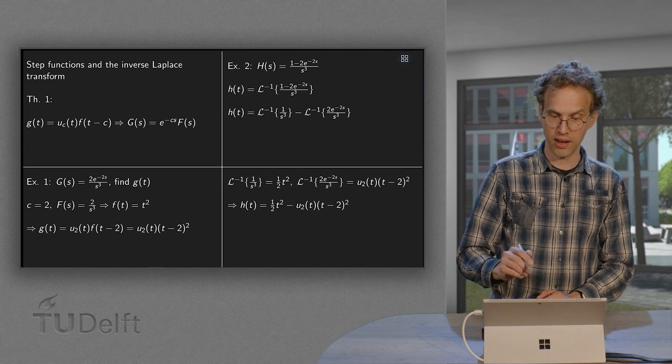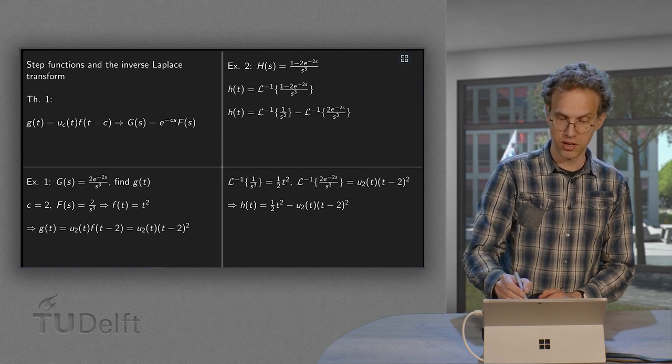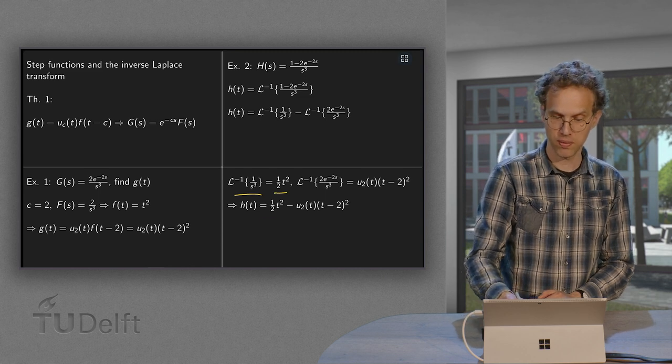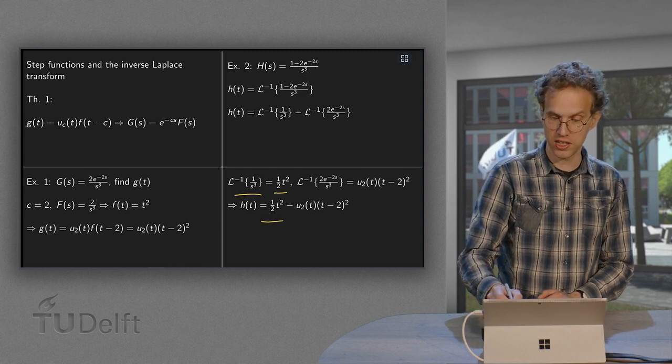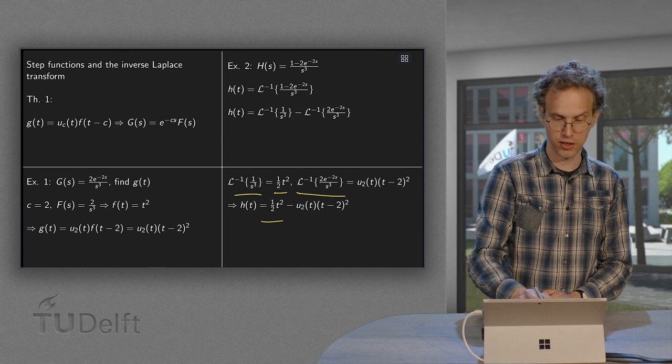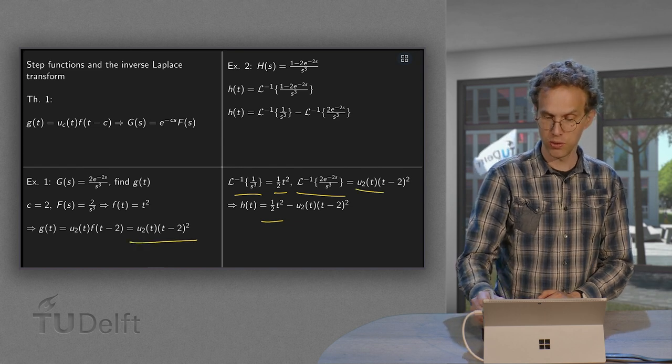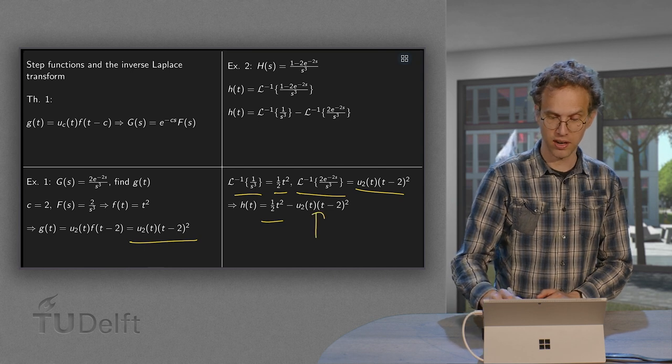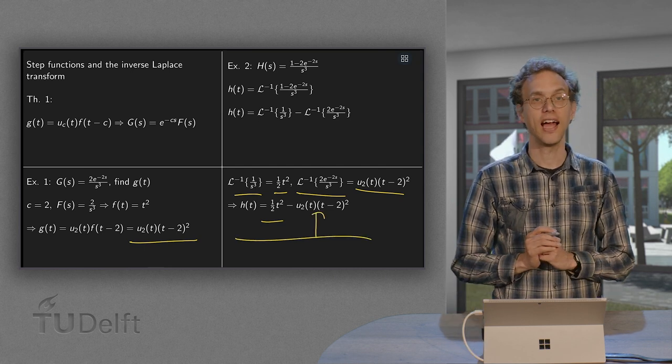So our h of t becomes the inverse Laplace transform of 1 over s cubed, which is 1 half t squared, minus the inverse Laplace transform of this thing, which we found over here: u2 of t times t minus 2 squared, which comes over here. So there we have our h of t.